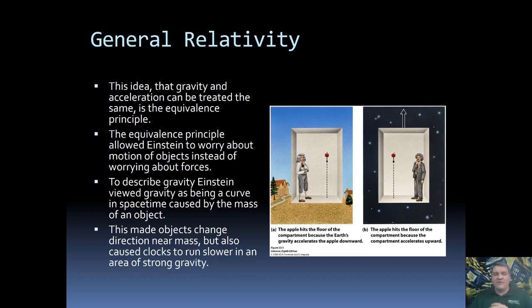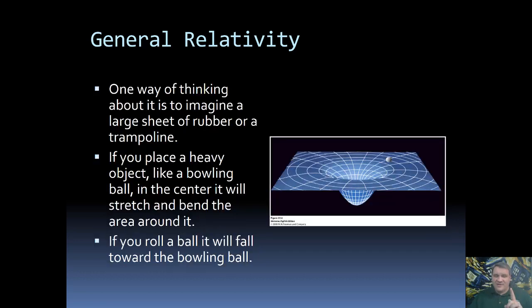Using this idea, Einstein describes gravity as a curvature of spacetime that allows the acceleration we see. So gravity is actually caused by a curvature of space which accelerates the object. Let's go through a thought experiment.